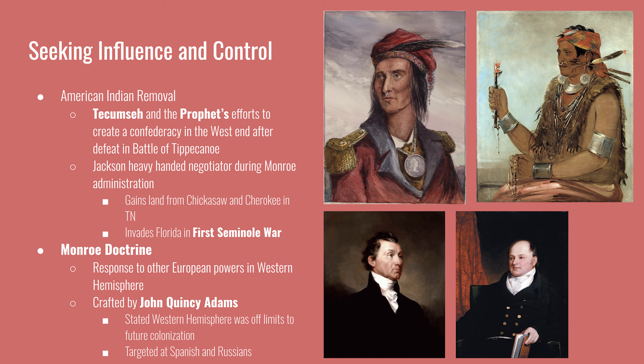The Monroe Doctrine was a response to other European powers in the Western Hemisphere. Spain was losing influence and might try to reclaim colonies, while Russia was making its way down from Alaska along the Pacific coast as far south as San Francisco. President Monroe, working with Secretary of State John Quincy Adams, put forth a foreign policy stating that any European power intending to colonize the Western Hemisphere would have to answer to the United States. The U.S. lacked the naval power to back this up alone, relying heavily on Great Britain — which also did not want European rivals in North America — making the Monroe Doctrine mutually beneficial.